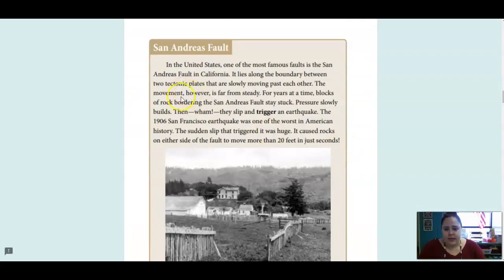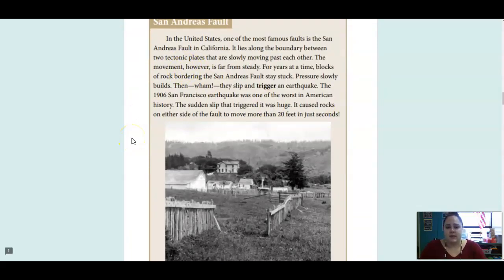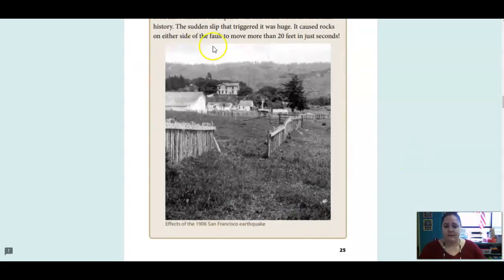The San Andreas Fault. In the United States, one of the most famous faults is the San Andreas Fault in California. It lies along the boundary between two tectonic plates that are slowly moving past each other. The movement, however, is far from steady. For years at a time, blocks of rock bordering the San Andreas Fault stay stuck. Pressure slowly builds, and then wham! They slip and trigger an earthquake. The 1906 San Francisco earthquake was one of the worst in American history. The sudden slip that triggered it was huge. It caused rocks on either side of the fault to move more than 20 feet in just seconds. And you can see here some of the effects of the earthquake. So our fence broke. You can see some houses in the back. The roofs were a bit collapsed.